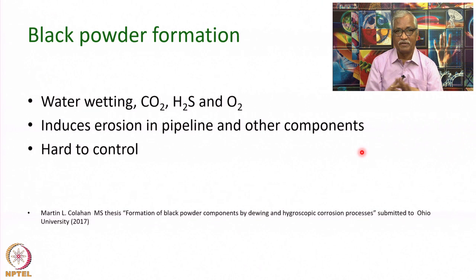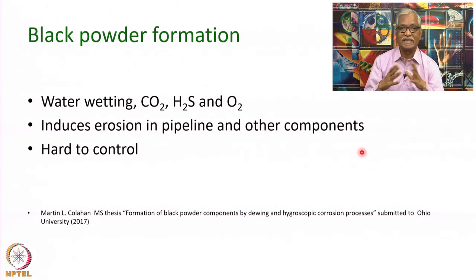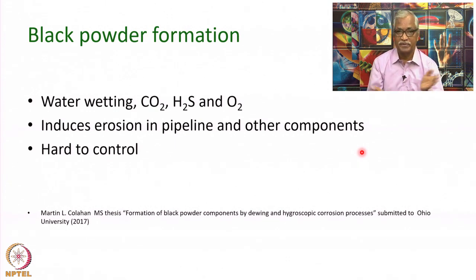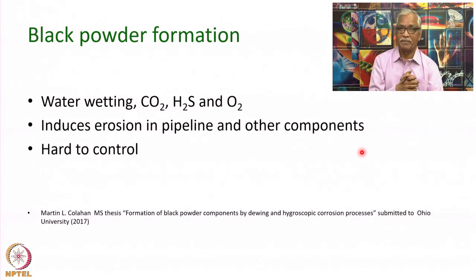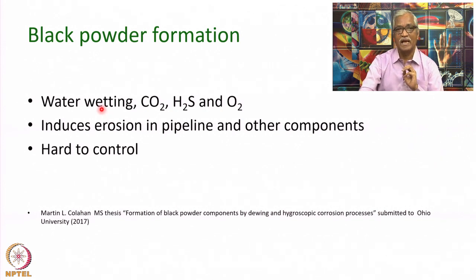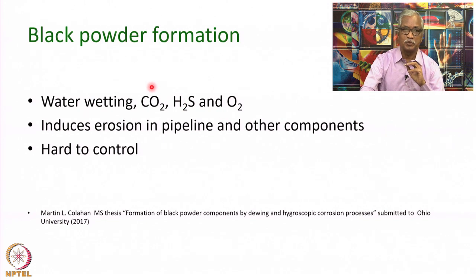Gas pipelines also suffer black powder formation, which lowers the wall thickness of the pipelines and causes erosion as the black particles dislodge from the surface. Gases transported to industrial units can suffer significant erosion damage. Black powder formation is mainly because of water present in the gas along with CO₂, H₂S, and oxygen. Oxygen acts as an oxidizer, increasing corrosion of the metal. It is really hard to control unless you control the water, CO₂, H₂S, and oxygen content of the gases.